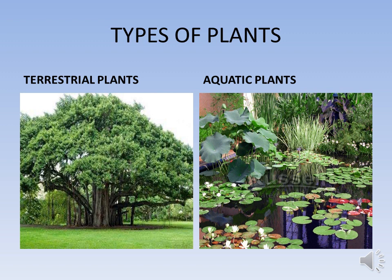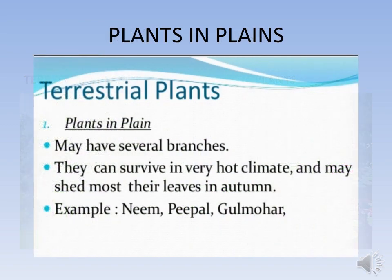Plants that grow on land are called terrestrial plants, and the plants that grow in water are called aquatic plants. Let us now study the features of plants found on land.